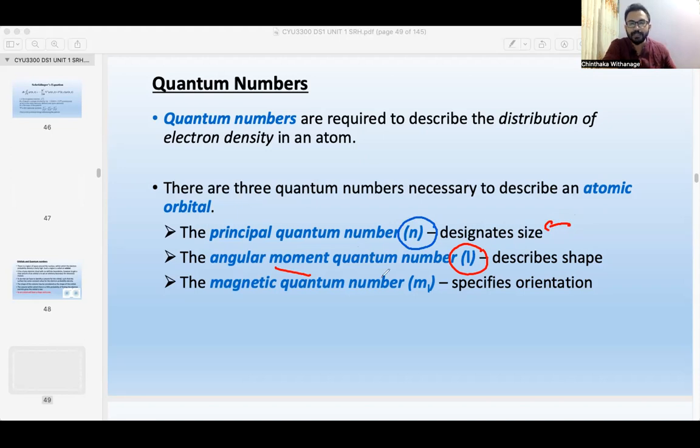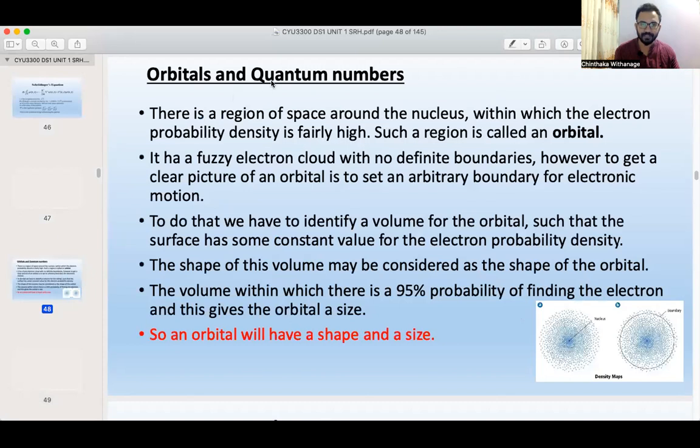The angular momentum quantum number is the second one and we use the symbol l to describe the shape. The magnetic quantum number is specific orientation, it is an orientation. We discuss the picture.